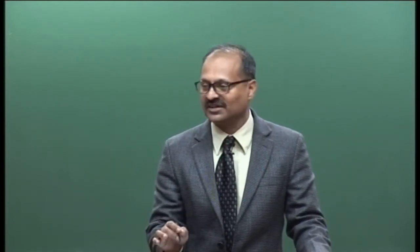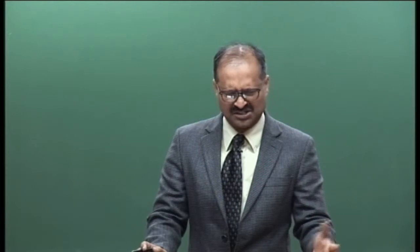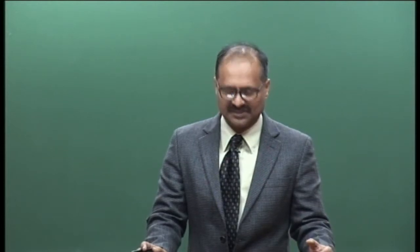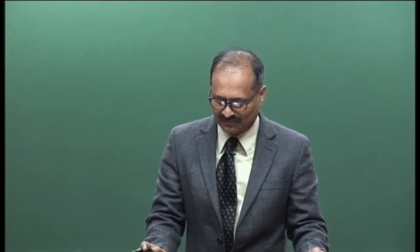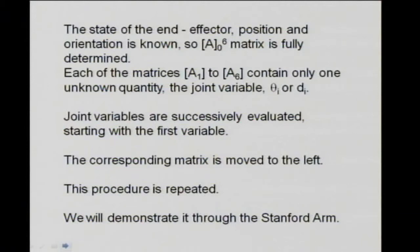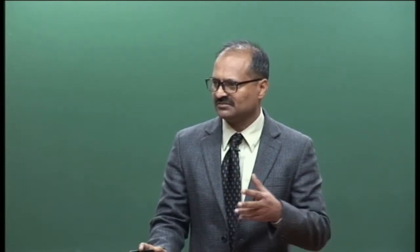There are specific reasons why we can solve for industrial manipulators using this method. For a general manipulator you cannot — for that there are other methods; look at the Raghavan-Roth paper and also a paper by Manocha from roughly the same time, which has a more compact solution. The procedure is: solve for a variable, move that matrix over to the left, solve for the next one, repeat.